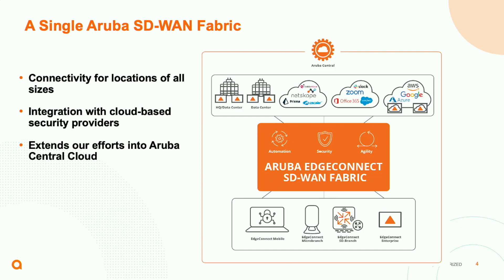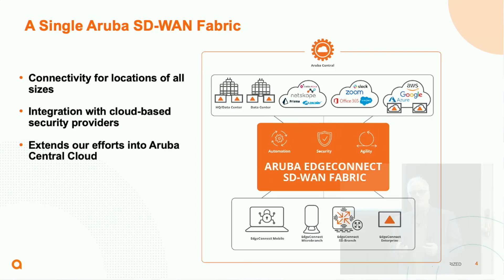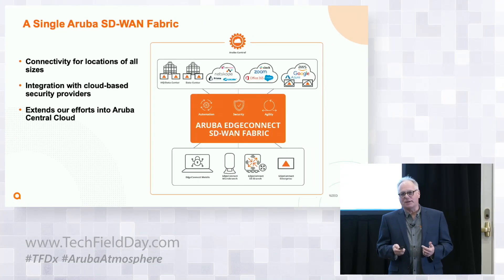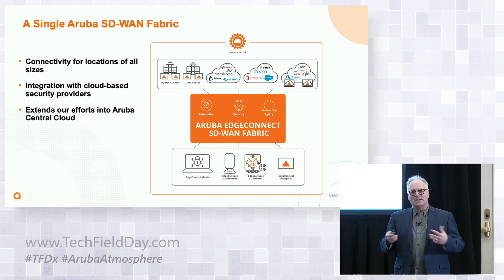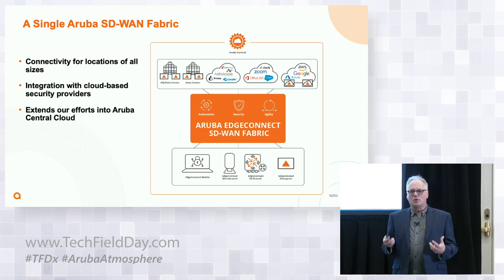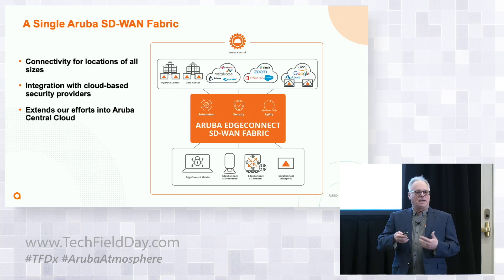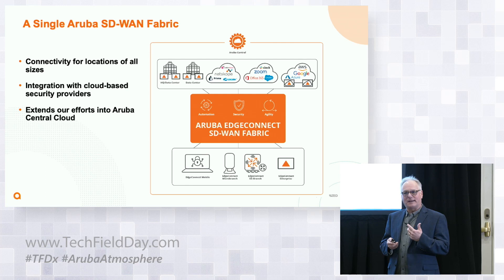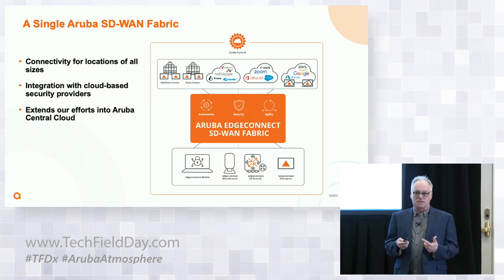This is a diagram of the fabric — it's a marketing diagram, obviously. But central to that is this unified SD-WAN fabric that provides all of the interconnectivity. It includes features like tunnel bonding, error correction, and packet order correction. All of that is embodied in the fabric.